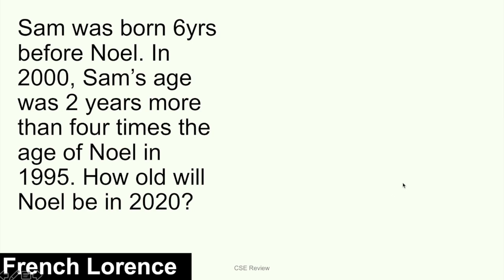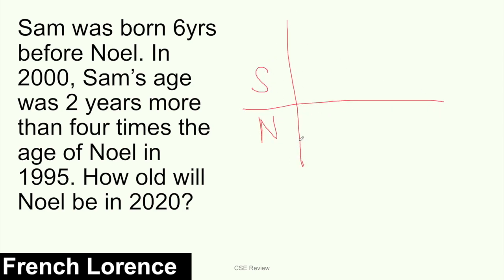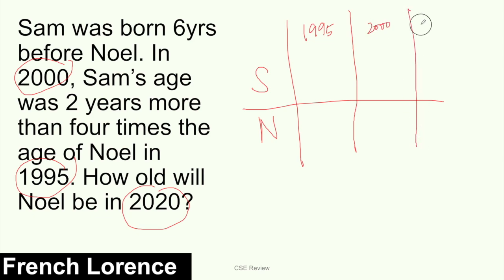This next question, pinadala ni French Lawrence. Sabi, Sam was born 6 years before Noel. In 2000, Sam's age was 2 years more than 4 times the age of Noel in 1995. How old will Noel be in 2020? So again, same process. We have Sam and Noel. In this case, hindi binigay ang time period — ang sinabi, actual years. So you have 2000, 1995, and 2020. So ang gagawin natin, ipipila lang natin siya. Yung pinakamalayo sa past, yung nauunang year is 1995. So I choose to put it right here: 1995, and then you have 2000, and then you have 2020.